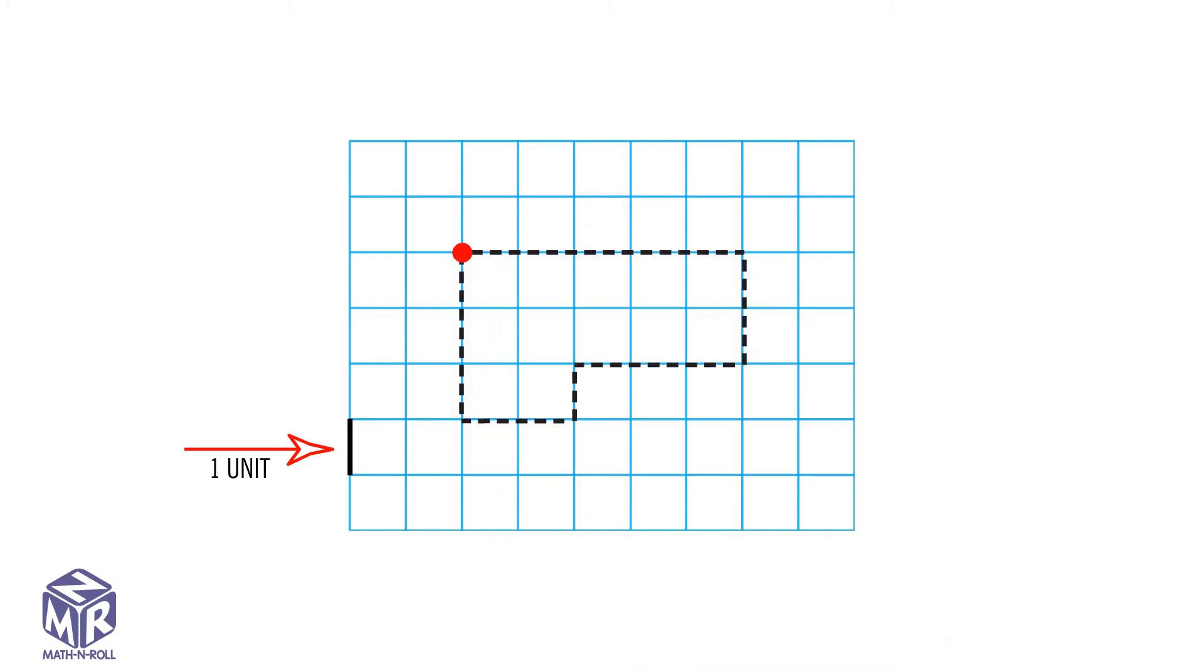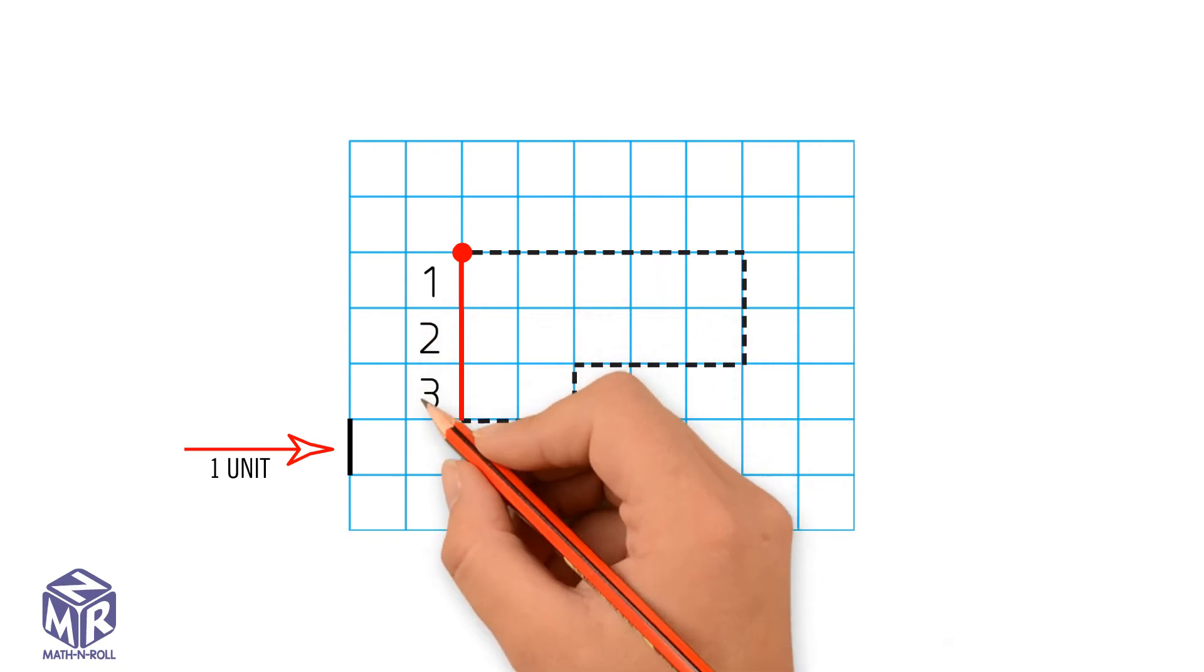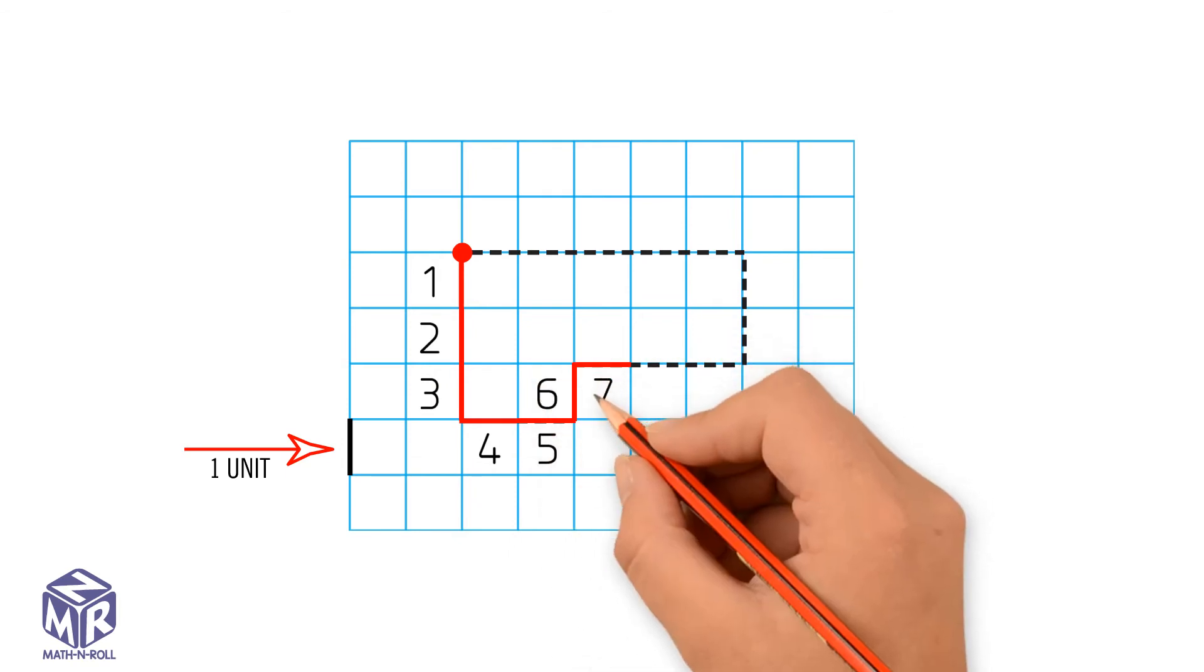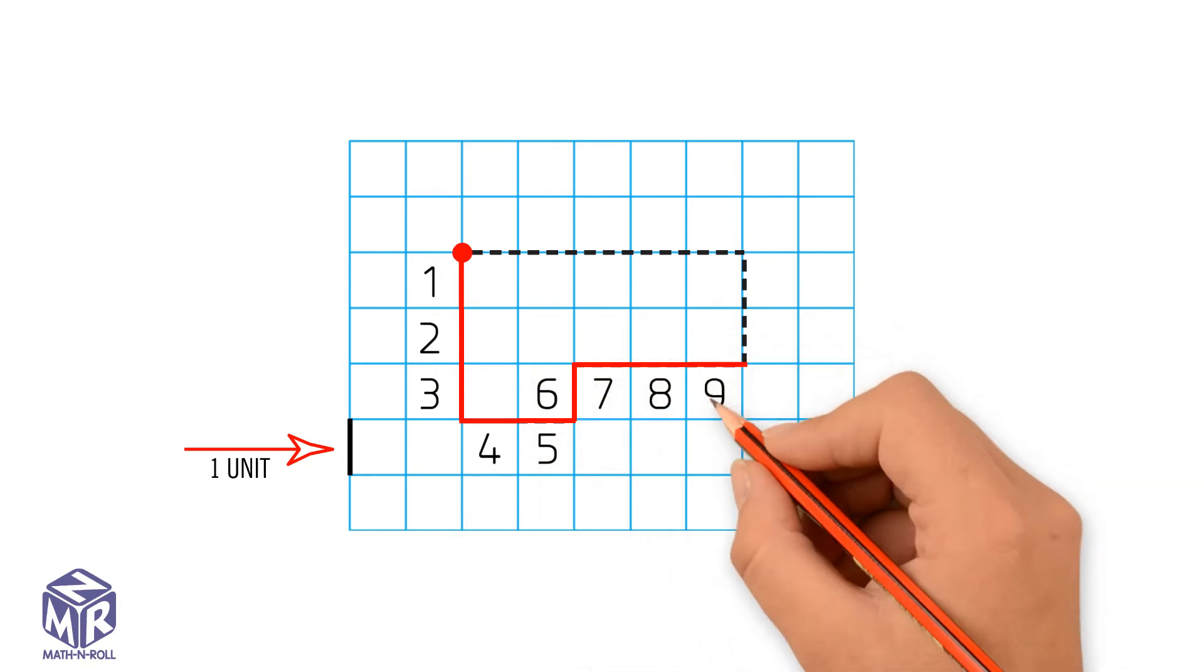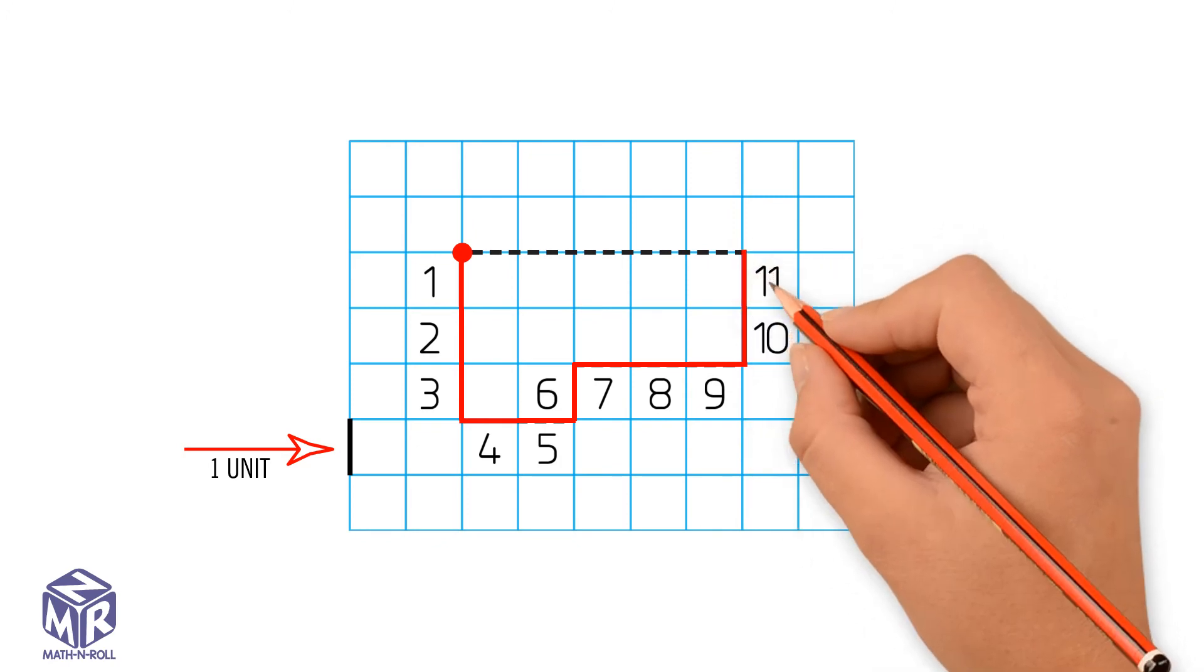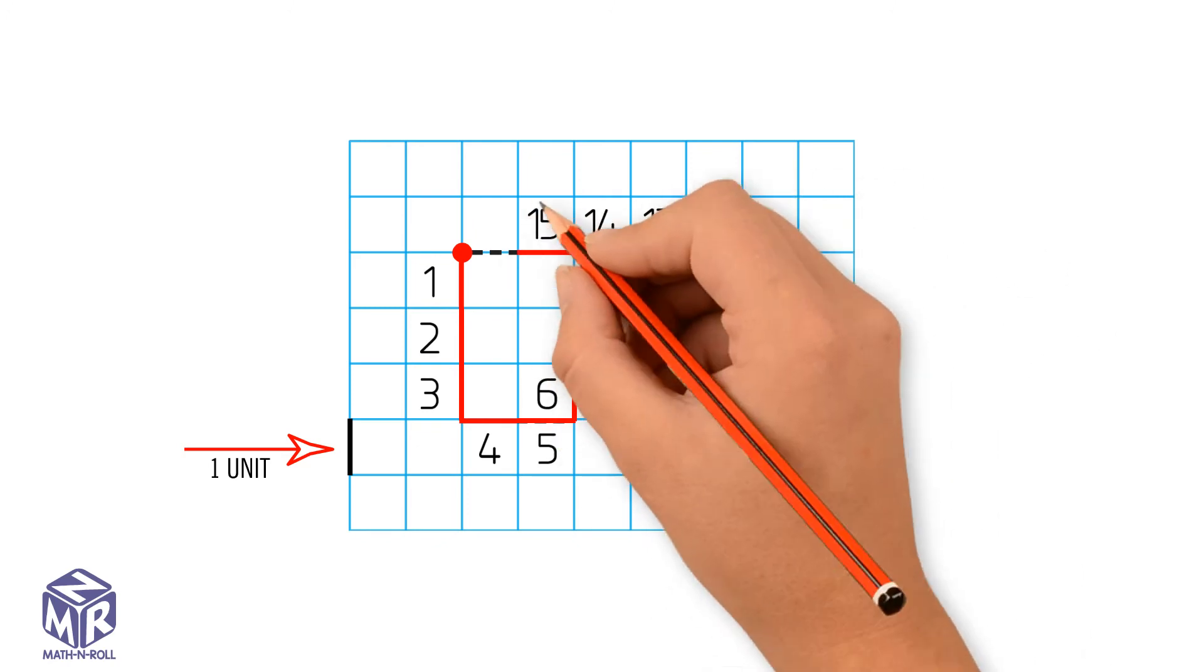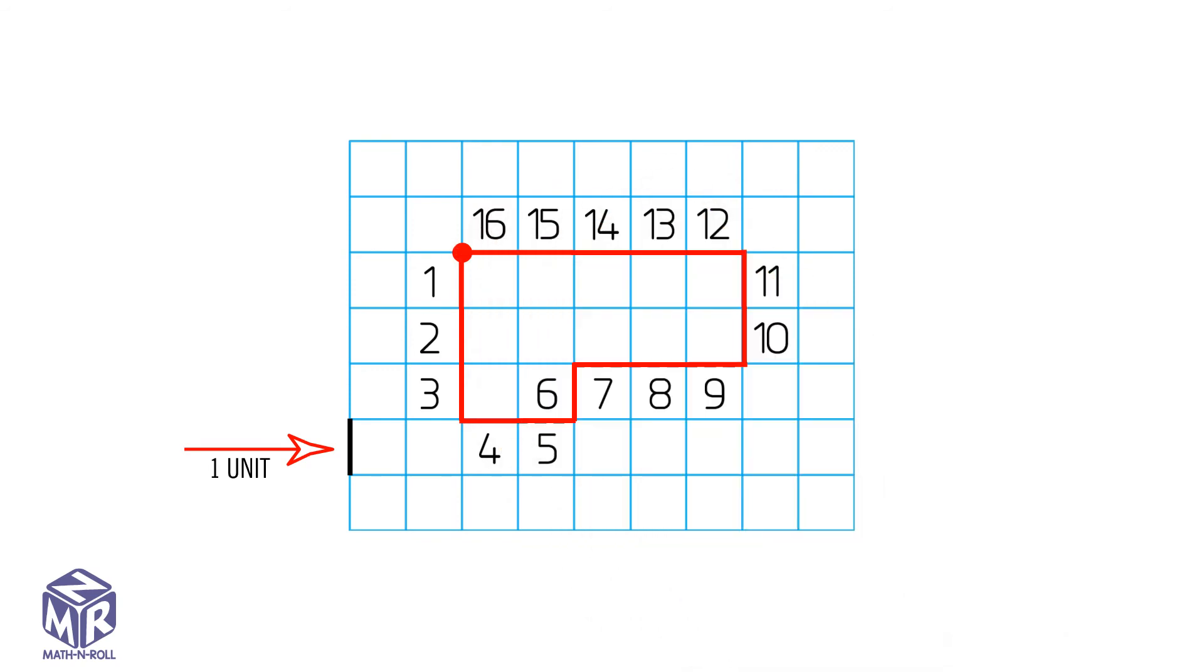First, we mark the starting point. Trace the perimeter. Begin counting with one. Continue counting each unit around the figure: 1, 2, 3, 4, and so on... 14, 15, 16. So the perimeter is 16 units.